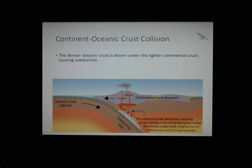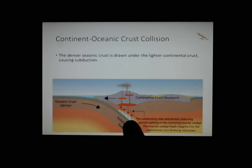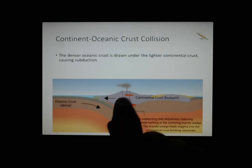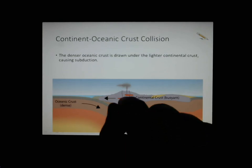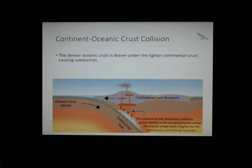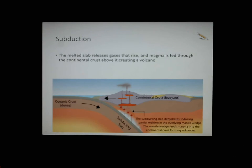Our next type is when a continent collides with an oceanic plate — a CO collision. Oceanic crust is denser, so it gets pulled down — this is called subduction. As it heats up, all those volatile organic materials on the oceanic crust get cooked, evaporating into gases like carbon dioxide. That rises, forces its way through the crust, and leads to volcanoes, with lava following through. So a CO collision causes volcanoes through subduction — you must remember that word whenever explaining CO collisions or any convergent boundaries.